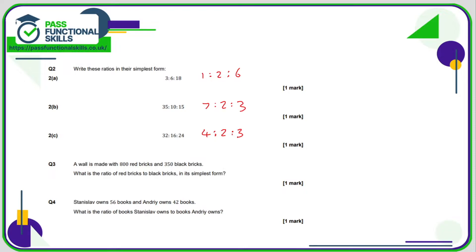Question 3: a wall is made with 800 red bricks and 350 black bricks. As a ratio that's 800 to 350. A very easy way to simplify is to chop off the zeros — that's dividing by 10 — giving 80 to 35. Both numbers are in the 5 times table. We can use a calculator here: 80 divided by 5 is 16, and 35 divided by 5 is 7, so the simplified ratio is 16 to 7.